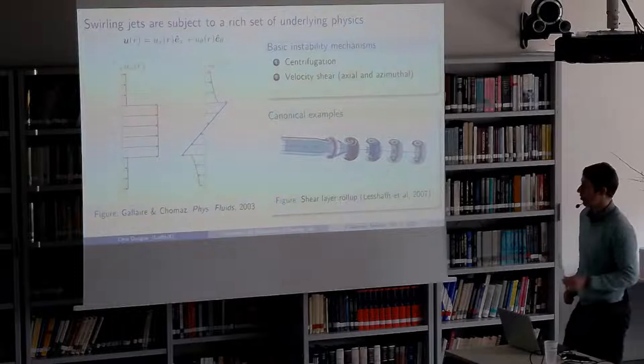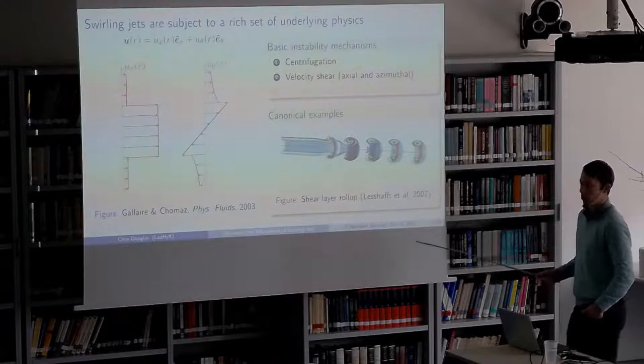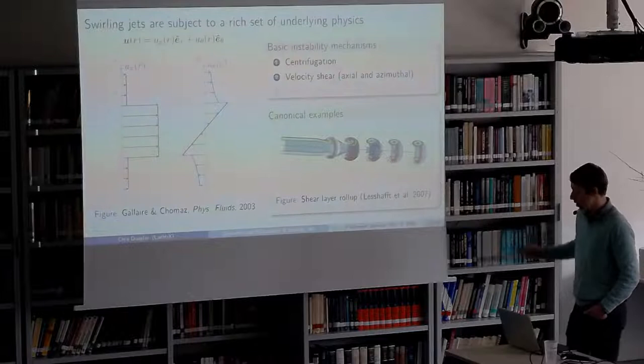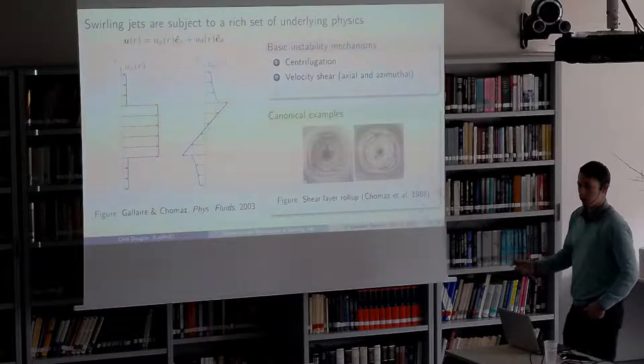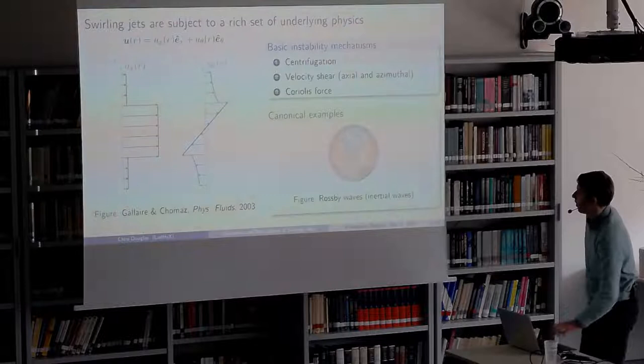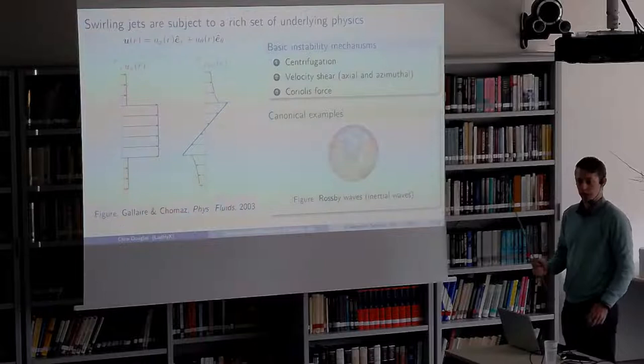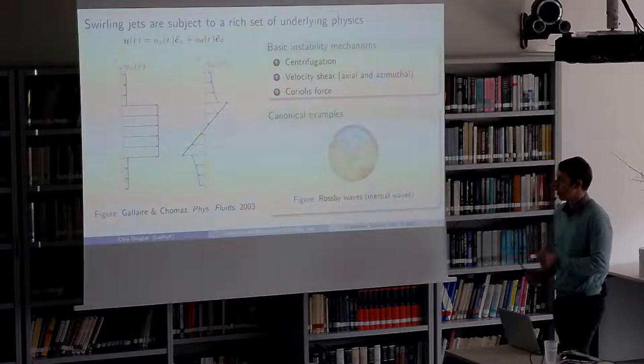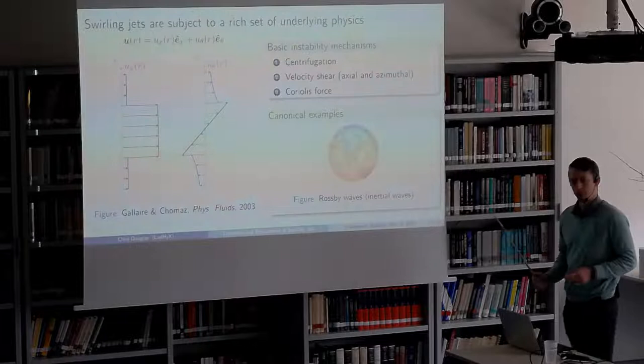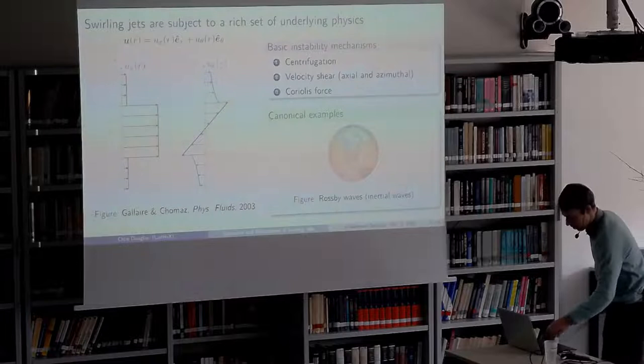You also have velocity shear associated with the shear layers in swirling jets, which leads to shear layer roll-up and Kelvin-Helmholtz instabilities — both in the axial direction and in the azimuthal direction due to azimuthal motion. And I think the least intuitive fundamental mechanism is the Coriolis force, which occurs in any rotating system where you have radial and azimuthal motion. The canonical example is the Rossby wave — if you've heard of the polar vortex, that can be attributed to the Rossby wave, which is an inertial wave stemming from the Coriolis force.